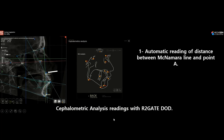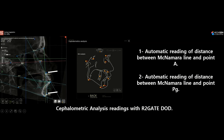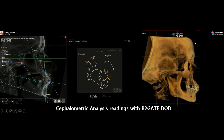In R2Gate digital oral design, you get an automatic reading of the distance between McNamara line and point A, and between McNamara line and point PG. In this case there is a 5.0 millimeter distance between point A and McNamara line — a protruded maxilla — and a 4 millimeter distance between point PG and the line — a protruded mandible. Looking at this patient's side view, we have both protrusion in the maxilla and mandible, demonstrating how cephalometric analysis helps determine the skeletal relationship and guide treatment planning.